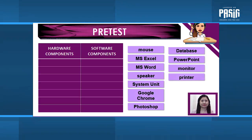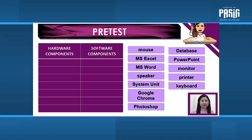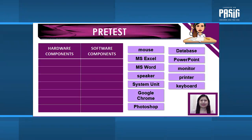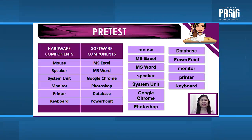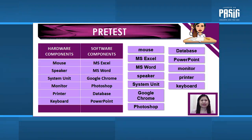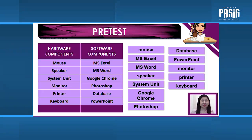The answers include monitor, printer, and keyboard. Now let's see if all of your answers are right. If you got 9 to 12 points, congratulations — you passed the pre-test. But if you got 8 points and below, then let's learn more about this topic.